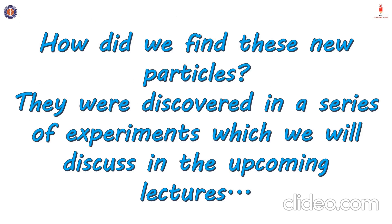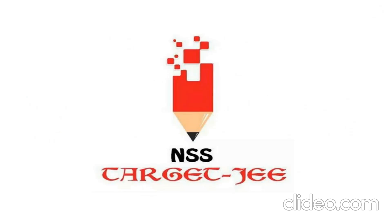Earlier I mentioned that for a long time it was thought that the atom is the smallest possible particle, but then these new particles — proton, neutron and electron — were discovered. How did that happen? They were discovered in a series of experiments which we will discuss in the upcoming lectures. Thank you for your patience, and for more videos on this topic, stay tuned to NSS Target J.